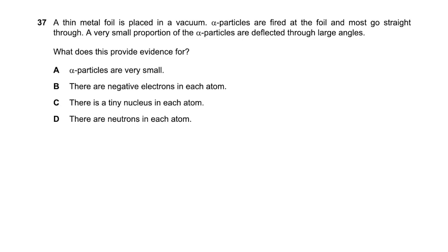Alpha particles are fired at a thin metal foil in a vacuum. Most pass straight through, but a very small proportion are deflected through large angles. What does this provide evidence for? We cannot conclude the presence of neutrons or electrons from this. The conclusion is that there is a tiny, dense nucleus in each atom. This is the alpha scattering (Rutherford) experiment.